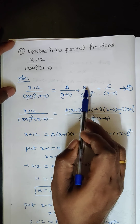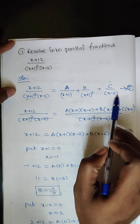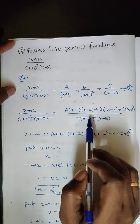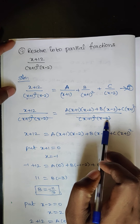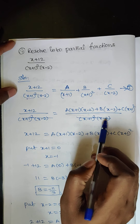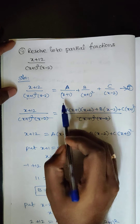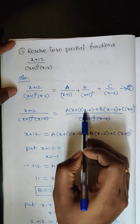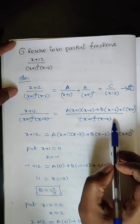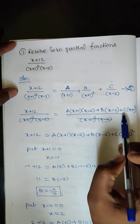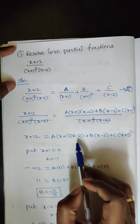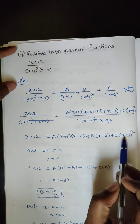So A/(x + 1) plus B/(x + 1)² plus C/(x − 2). Now (x + 12) divided by (x + 1)² into (x − 2) is equal to, taking the LCM as (x + 1)² into (x − 2): x + 12 equals A·(x + 1)·(x − 2) plus B·(x − 2) plus C·(x + 1)².